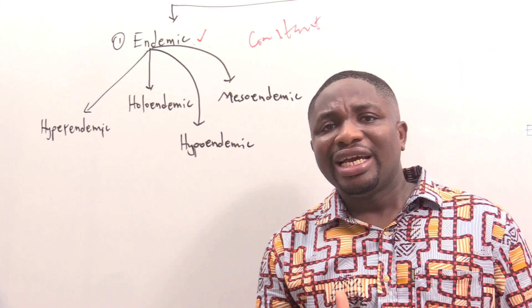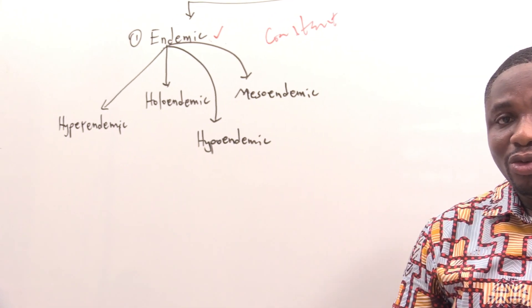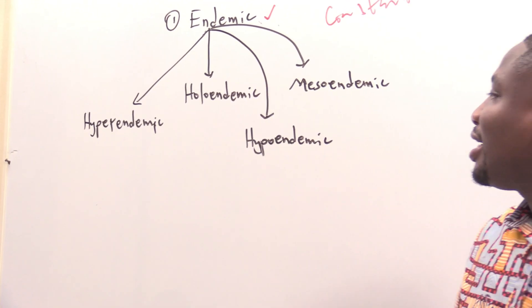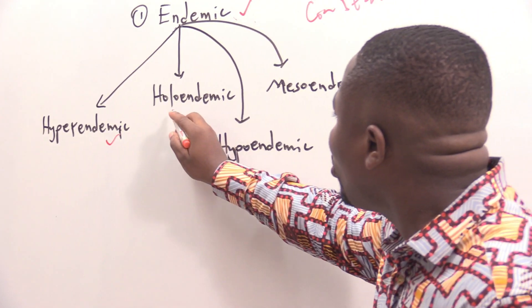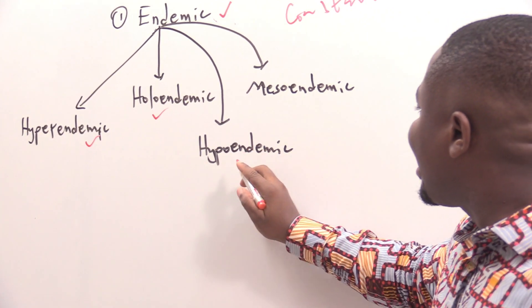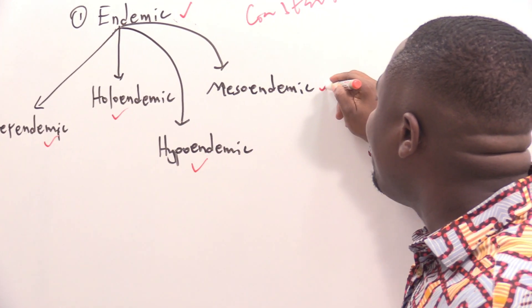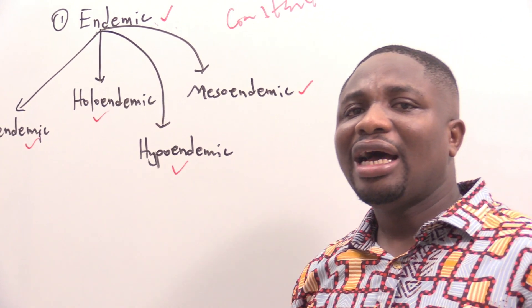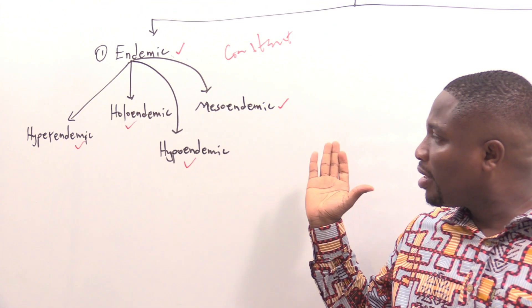For the endemic, we can subdivide it into four types: hyperendemic, holoendemic, hypoendemic, and finally mesoendemic. Now let's take a look at each of them.